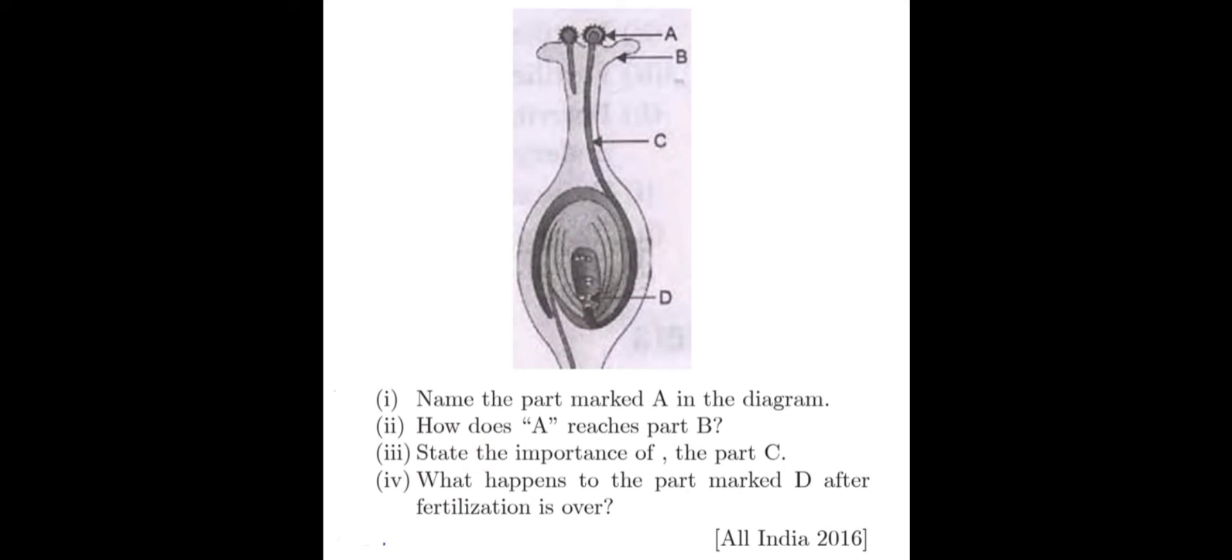The part marked A in the diagram is pollen grain. The pollen grain reaches the part B. Part B is the stigma. Pollen grains reach stigma by the process of pollination. Part C is pollen tube. What is the importance of this pollen tube? Pollen tube carries male gametes to the female gamete, which is placed in the ovule. The part D is the ovule. After fertilization, the ovules become seeds.